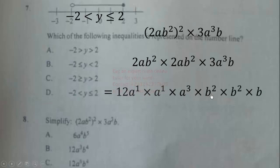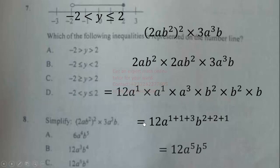When multiplying powers with the same base, we write one base and add the exponents. Multiplying constants: 2 × 2 × 3 = 12. For a: a¹ × a¹ × a¹ = a^(1+1+1) = a^3... wait, combining: a exponents 1+1+3 = a^5. For b: b exponents 2+2+1 = b^5. The correct answer is 12a⁵b⁵.